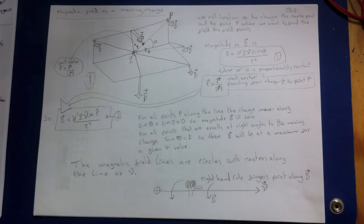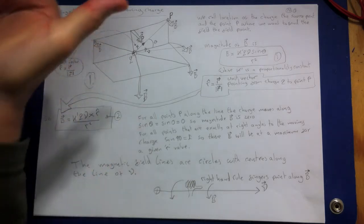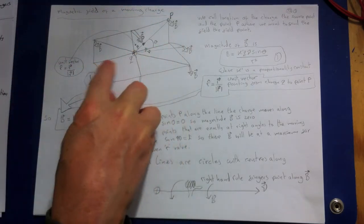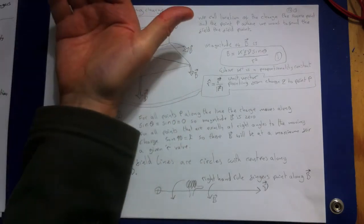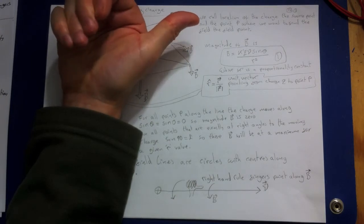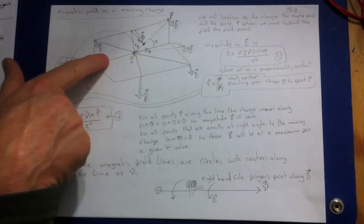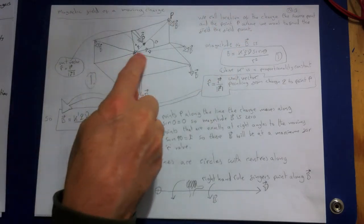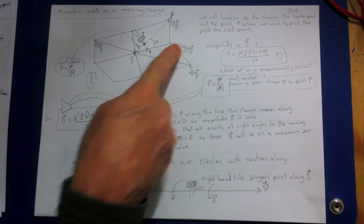The direction of these field lines is given by a right-hand rule: we grasp the velocity vector V with our right hand so that the thumb points in the direction of V, and the fingers curl around the line — that curling direction is the direction the magnetic field lines go. So for a charge moving along a line, the field lines make circles around its path.